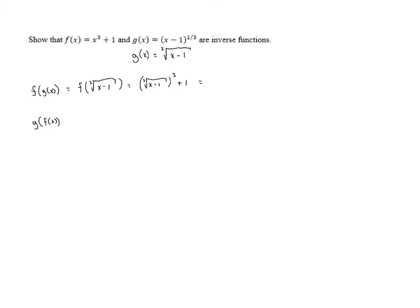Now, if we take the cube root of something and then cube it, we end up with what we have inside. This gives us x - 1, and then we have the plus 1 on the outside.